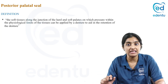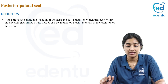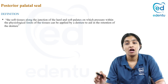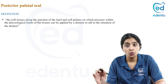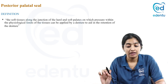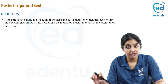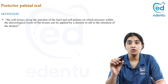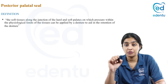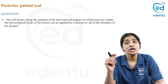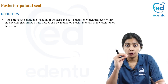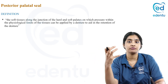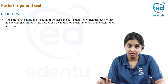Coming to the definition, GPT defines PPS as the soft tissues along the junction of the hard and soft palates on which pressure within physiologic limits of the tissues can be applied by a denture to aid in retention of the denture. So it is the junction between the hard and soft palate where you can apply force within physiologic limits by the denture, which will help in retaining the denture in place.